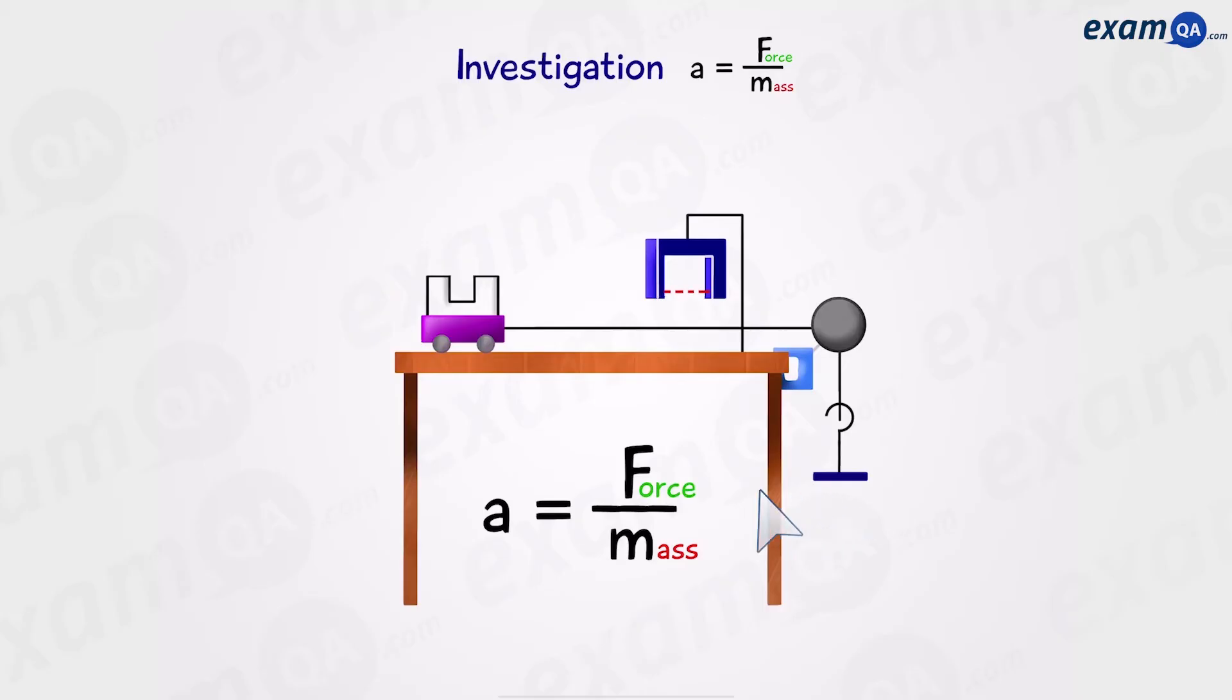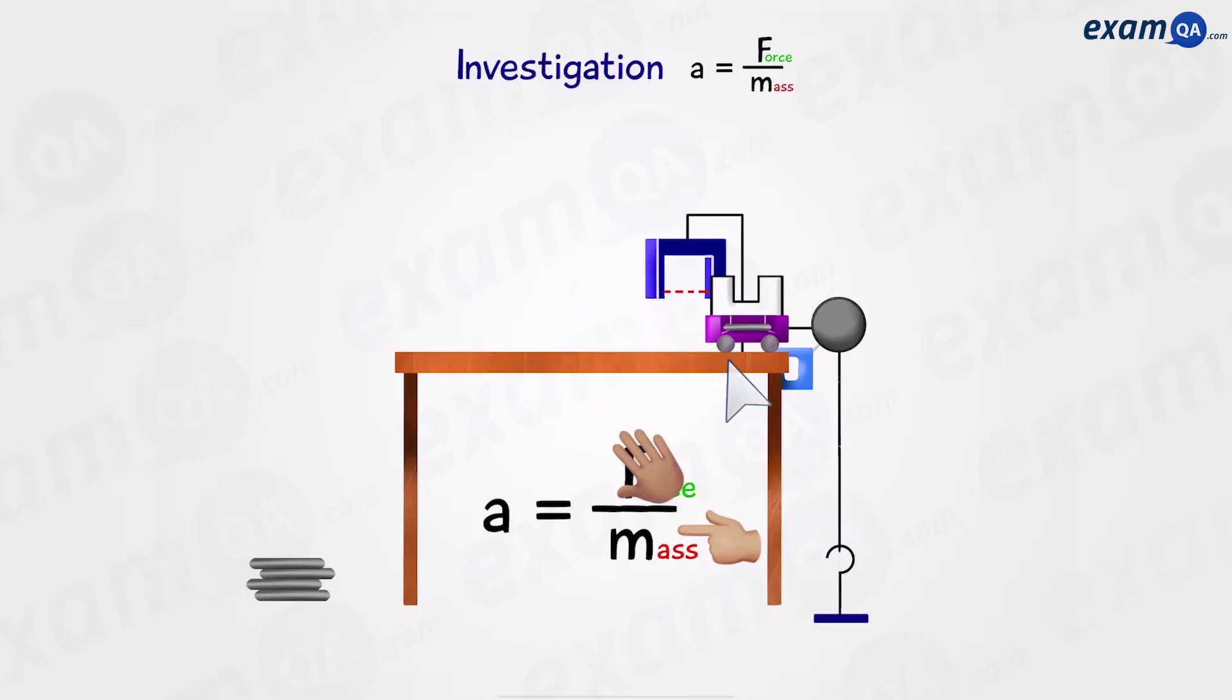Let's say we want to investigate the effect of force. That means we're going to have to change force, but keep mass constant. And if you want to investigate mass, you're going to have to keep force constant. So here we have some masses. What we're going to do is place the mass on the trolley. Then we're going to run the experiment, and the data logger will tell us the acceleration.